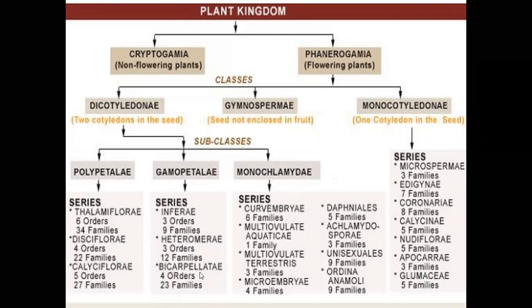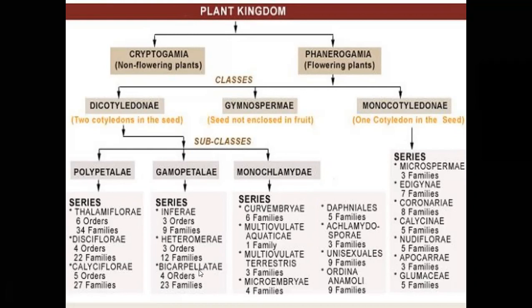The last series of gamopetale is bicarpellatae, meaning only two carpels are present. The ovary is superior, stamens are many, and stamens alternate with the corolla. The bicarpellatae series is classified into four orders and twenty-three families.